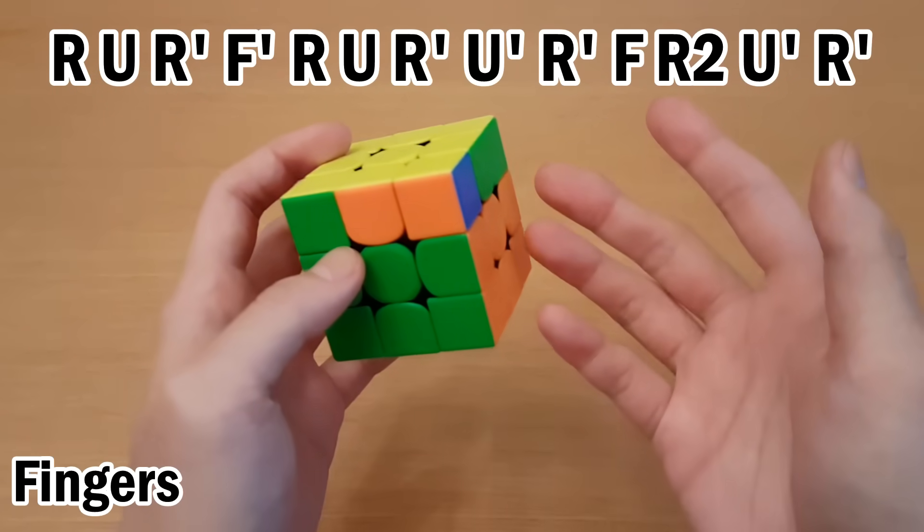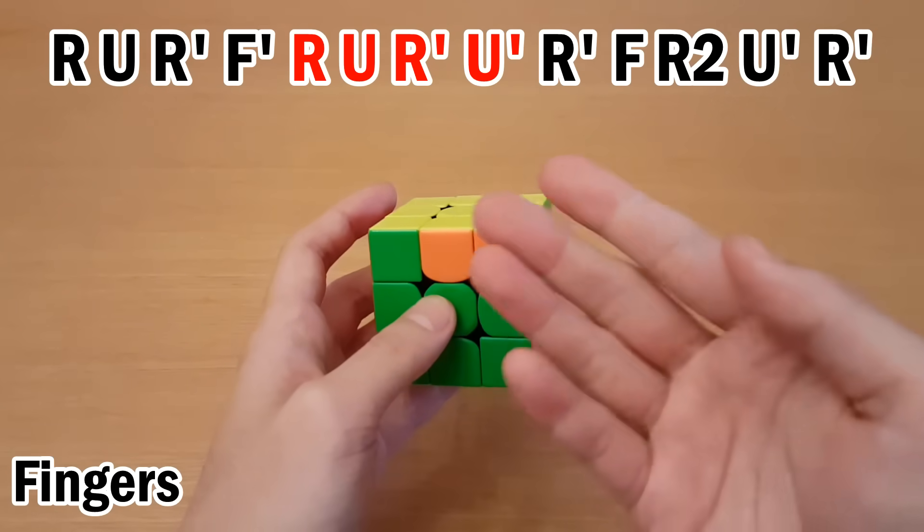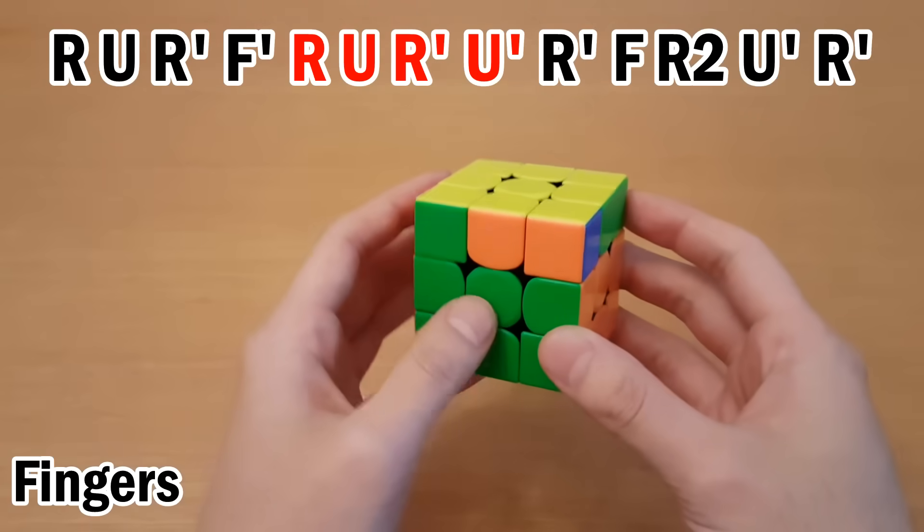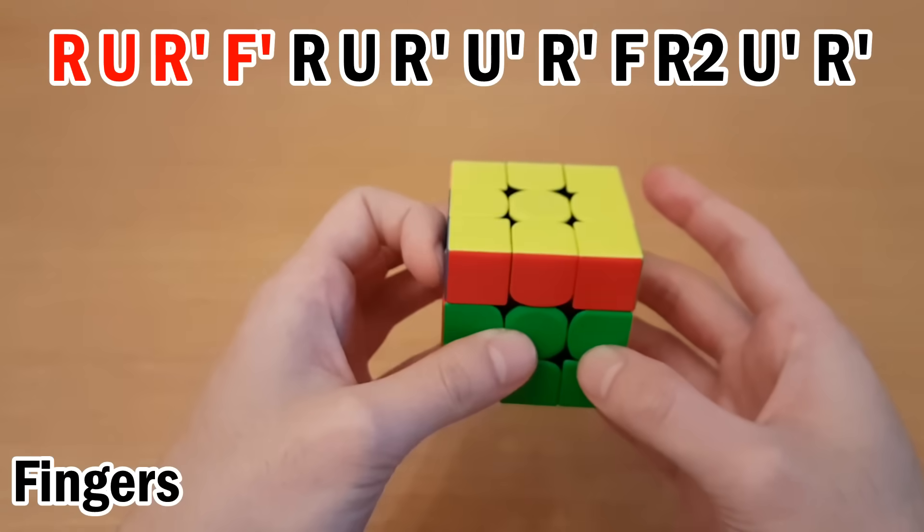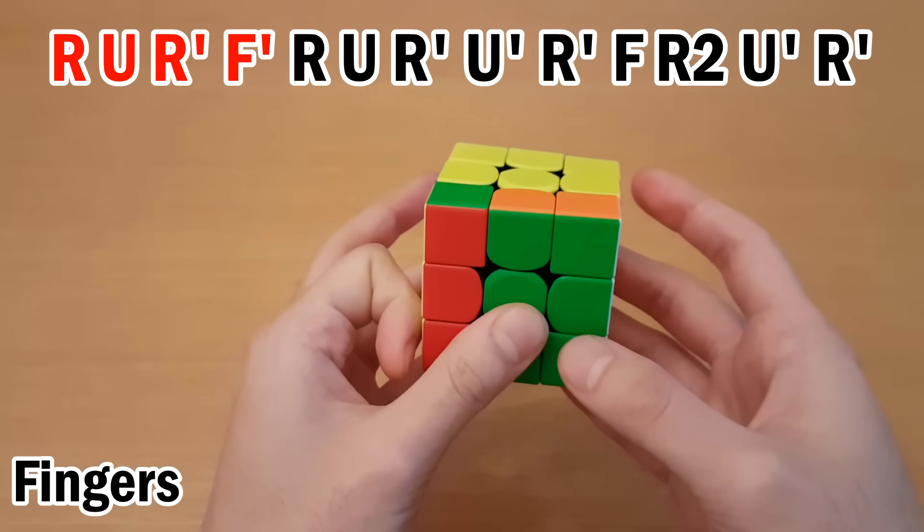You can also try and remember what your fingers do. So in this algorithm, these four moves in the middle, that's a sequence known as the sexy move. Now the four moves right before it are actually the same thing, except instead of a U', you do an F' like this instead.